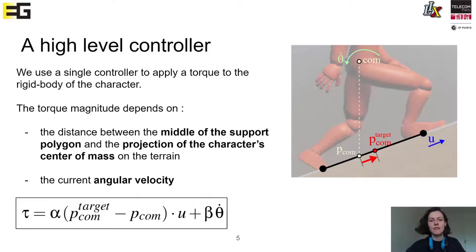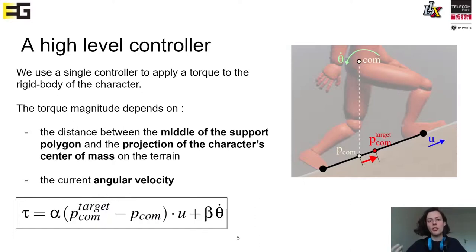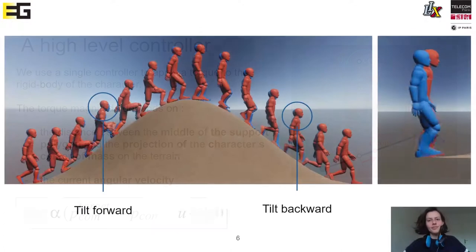On the image you can see several elements. The two black disks represent a projection of the feet on the slope of the terrain — we work fully in 2D using that plane. The segment between the two black dots is the support polygon, and we want a projection of the center of mass to be in the middle of that support polygon. The goal projection of the center of mass is the red dot, and the actual projection is the yellow dot. The first term of our torque is the distance between these two points, and we also add the current angular velocity to control the oscillations of the character.